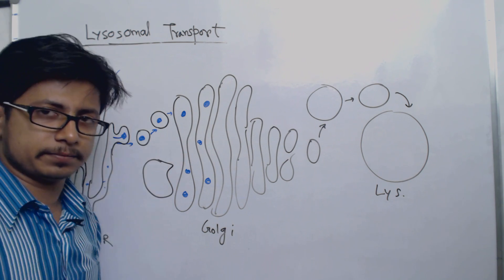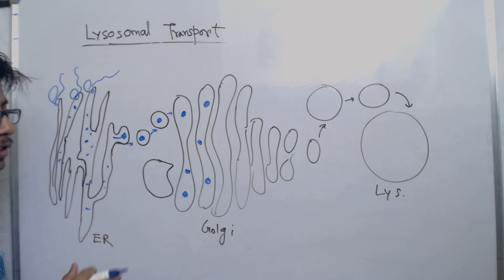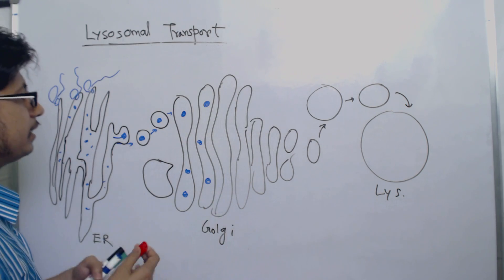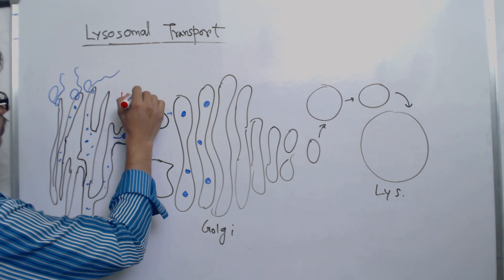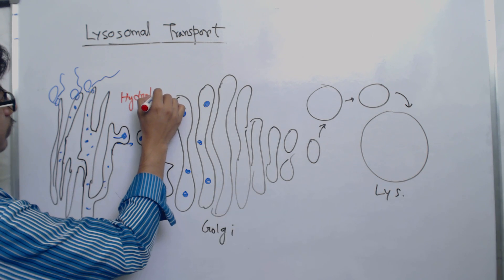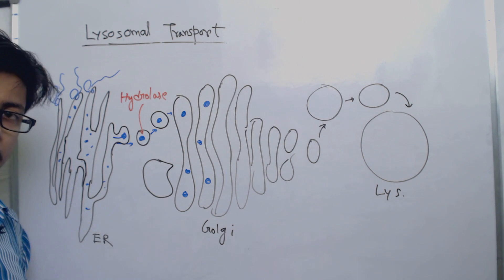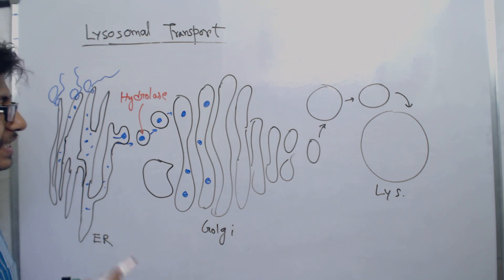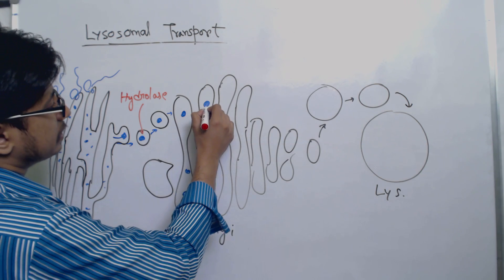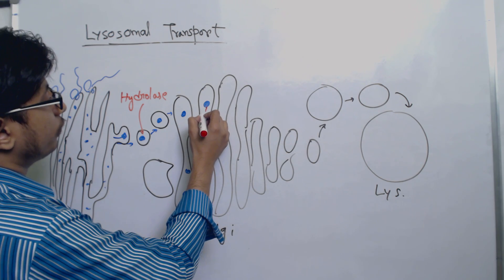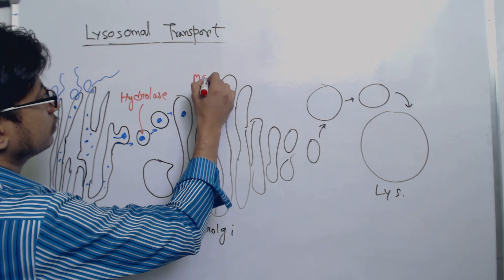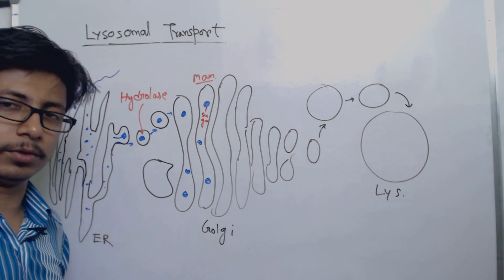Once that's done, what happens in Golgi is those proteins are modified. There are different chemical modifications. In this case, let's say this protein is hydrolase. This is a hydrolase protein that we are tracking. Now the protein in the Golgi apparatus should be modified. In this case, the modification is addition of sugar, let us say mannose.